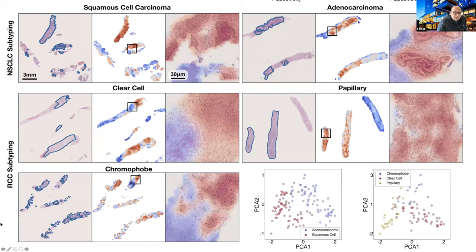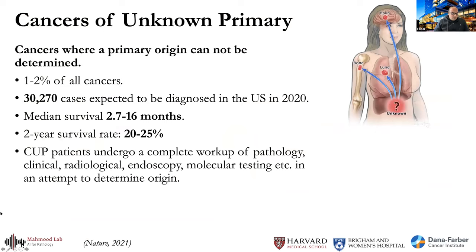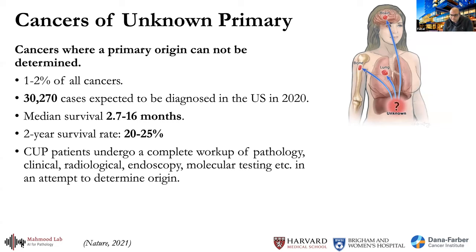We also looked at adapting whole slide images to biopsies and found models were generally adaptable. One key motivation for a data efficient training mechanism was to target the problem of cancers of unknown primary. When cancer metastasizes, it often becomes unclear at first presentation where the origin of the tumor is, and identifying the origin is quite important.